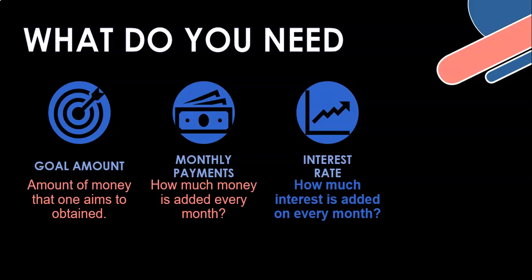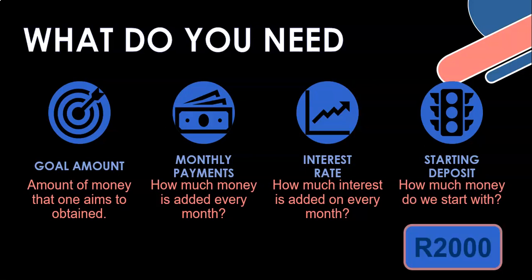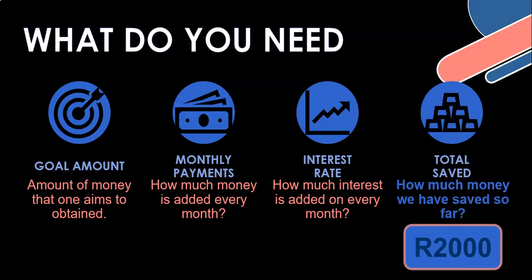We're going to have compound interest - how much money gets added to our bank account from the bank. And we're going to have a starting amount, a starting deposit. We've got some money saved and we're going to put that into the bank account. So I'm going to put that money into another variable which is going to record how much money is in the bank account. I give it a starting amount - we initialize it to what our deposit is.